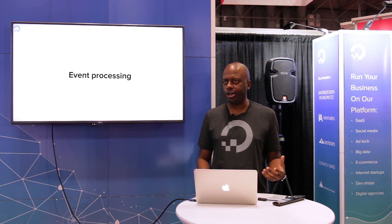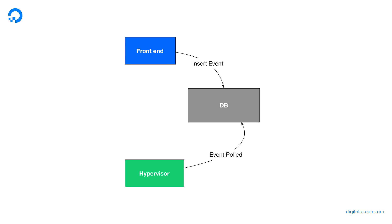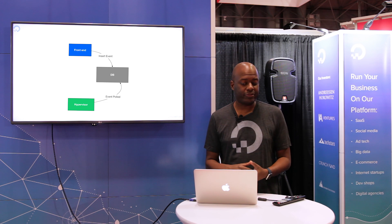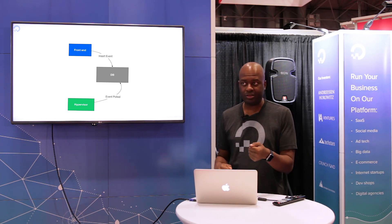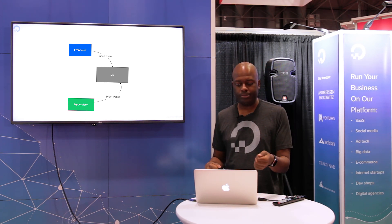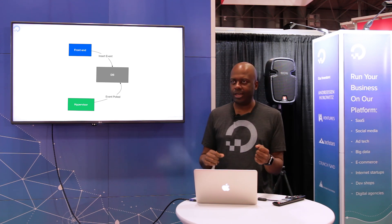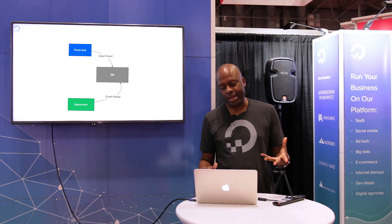I've drawn a little picture here to describe what I'm talking about. When we first started, we had a very simplistic event system — it's definitely more complex than this, but to simplify it: we had a front end, a database, and a hypervisor. If we wanted to boot a hypervisor, we would insert an event that says 'create droplet.' It would go into the database, and then some process would work on all the hypervisors — they would query or pull the database, and one server would win and boot the droplet.